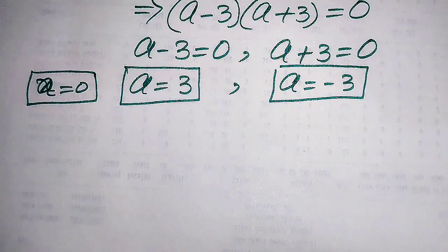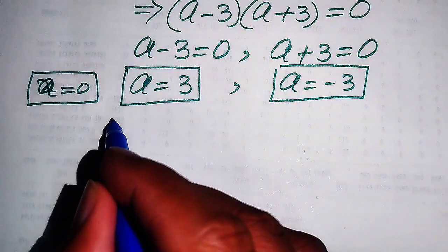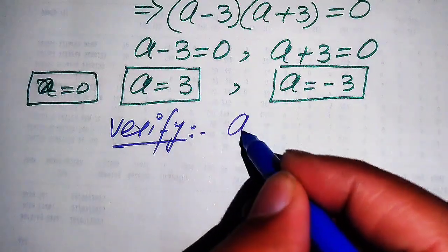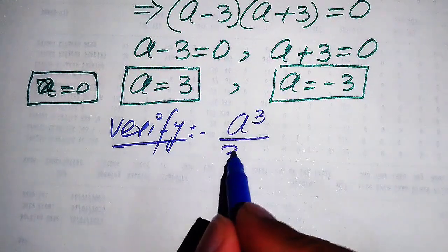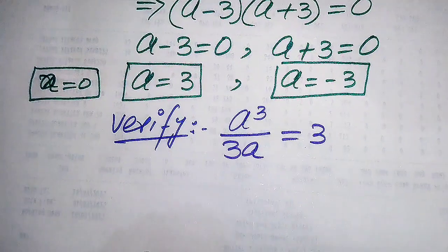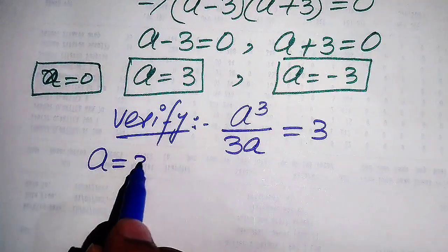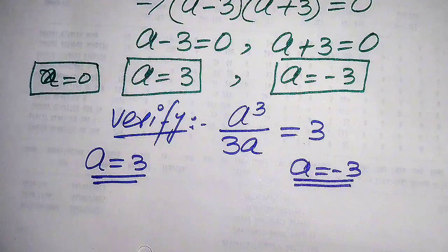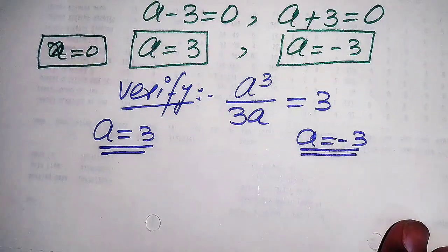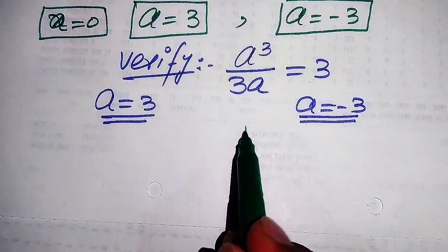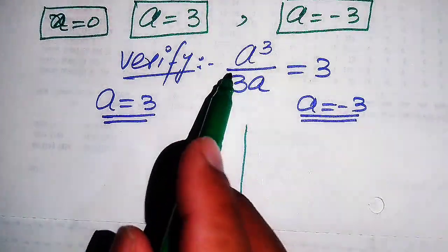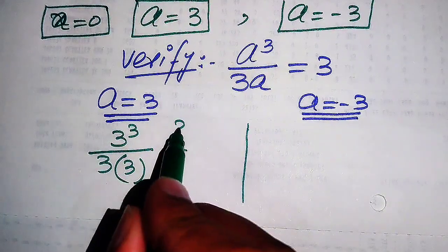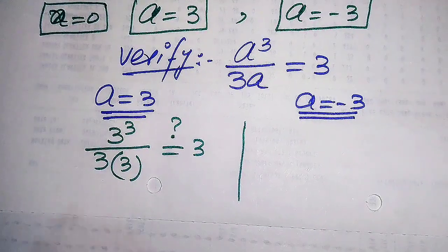Now we need to verify whether all three roots are solutions or extraneous roots. We copy down the given equation: a cubed divided by 3a equals 3. We will verify a equals plus 3 on one side and a equals minus 3 on the other side. Substituting a equals 3 into the left hand side gives us 3 cubed divided by 3 times 3.